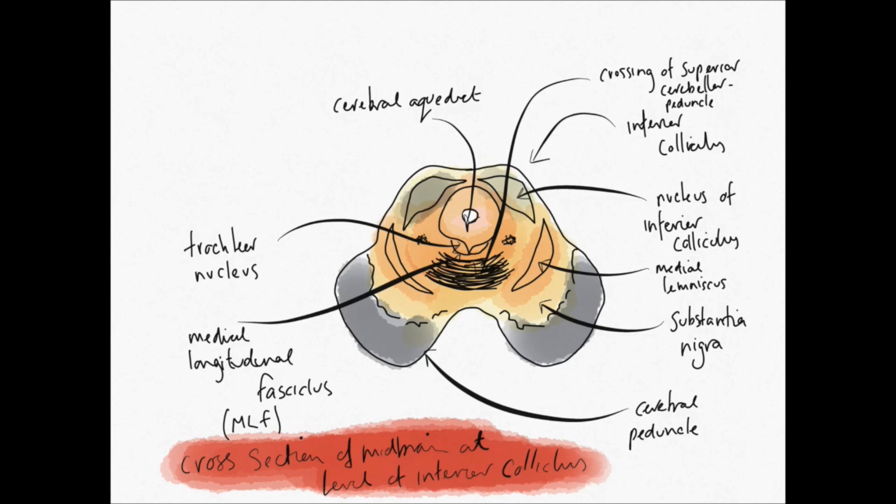What really tells this level apart from the level of the superior colliculus is that now we have the trochlear nucleus that's visible in the centre. So instead of the oculomotor nucleus, we have the trochlear nucleus. And in the middle there, those black fibres are the crossing superior cerebellar peduncle fibres, which are important for the information travelling to the red nucleus and up to the thalamus as part of the cerebellar outflow.